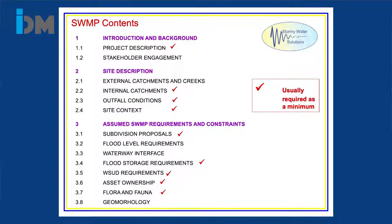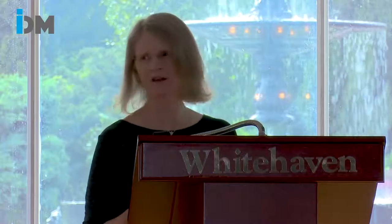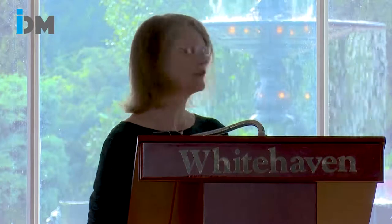This is the typical content of a stormwater management plan that we produce. At a minimum a stormwater management plan should include a project description, and in the site description: internal catchments, outfall conditions, and site context — what the developer wants but also existing constraints. Section 2.1 is very important too: if there are external catchments and creeks, even if they don't intersect with the site, if they're close or adjacent there's potentially a flood impact that needs to be addressed. For small subdivisions on the edge of town, at least sections 2.2 to 2.4 are needed.